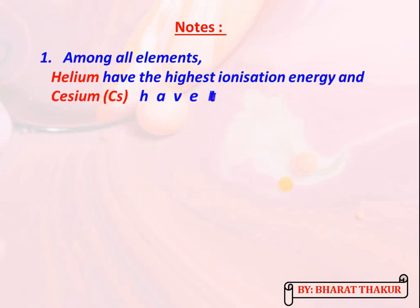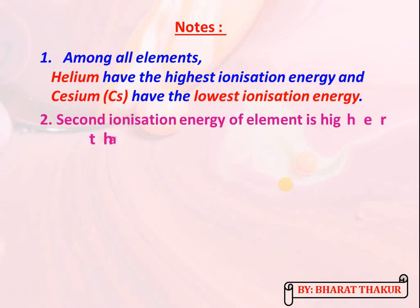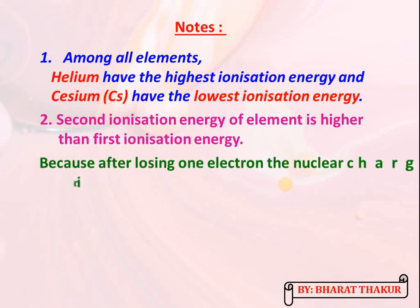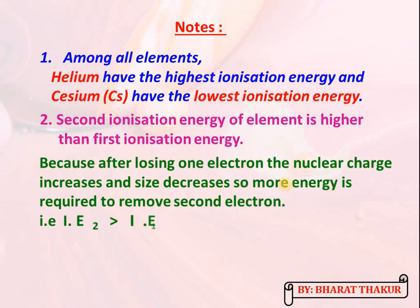Note: among all elements, helium has the highest ionization energy and caesium has the lowest. The second ionization energy of an element is higher than the first, because after losing one electron the effective nuclear charge increases and atomic size decreases, so more energy is required to remove the second electron.